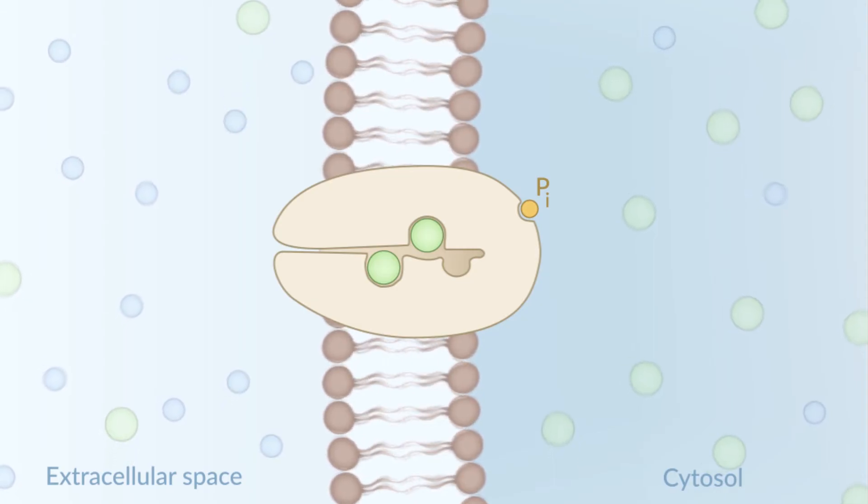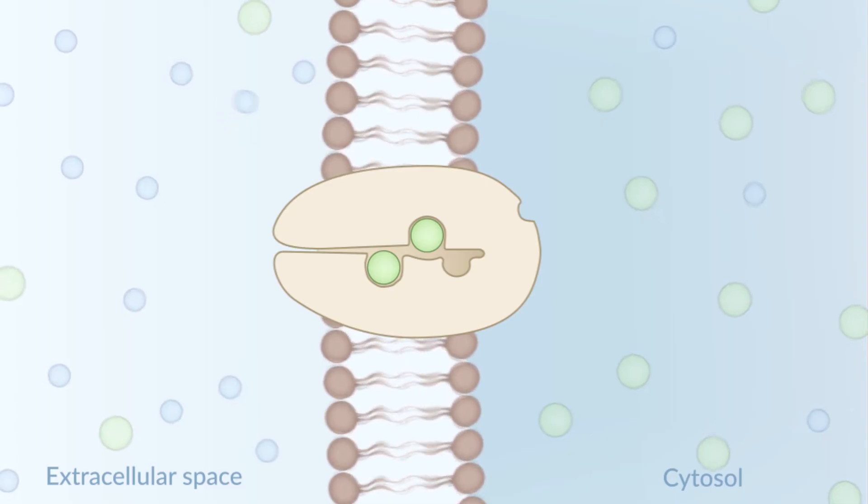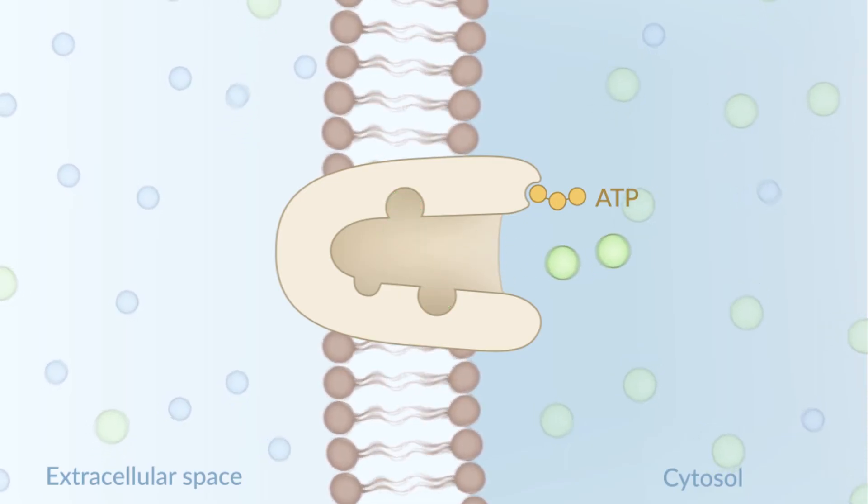The intracellularly bound phosphate is cleaved hydrolytically, that is, by a water molecule. Through the subsequent binding of another ATP molecule, a new conformational change of the ion pump occurs that opens it to the intracellular side. The potassium ions are released into the cytosol.